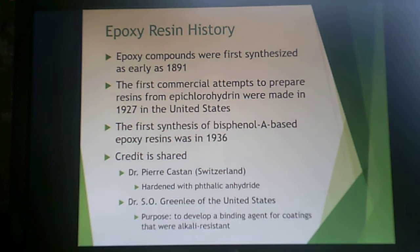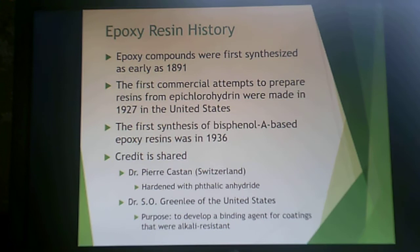Epoxy compounds were first synthesized as early as 1891, but the first commercial attempts to prepare these resins from epichlorohydrin were made in 1927 in the United States. The first synthesis of bisphenol-A-based epoxy resins was in 1936, with credit shared between Dr. Castan in Switzerland and Dr. Greenley in the United States. Castan hardened them with phthalic anhydride, and Greenley developed them as a binding agent for alkali-resistant coatings — they worked independently but arrived at the discovery simultaneously.